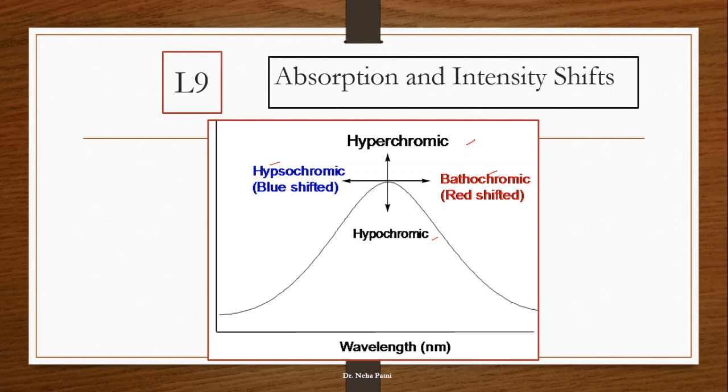Here, if you can see, red shifted is bathochromic shift. That means on addition of certain compounds, if there is an increase in the wavelength of the band, the particular shift is known as bathochromic shift. At the same time, if you remove some unsaturation, the particular wavelength decreases and the shift is known as hypsochromic shift.